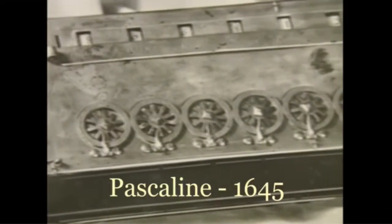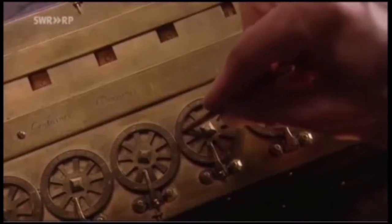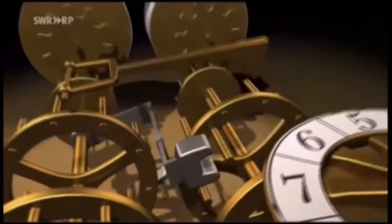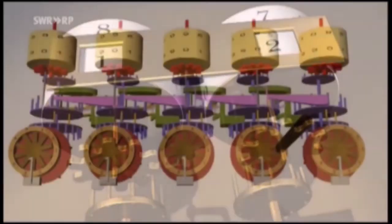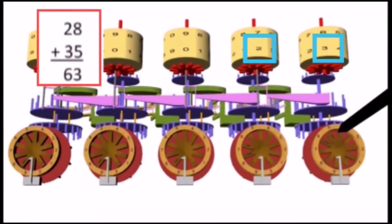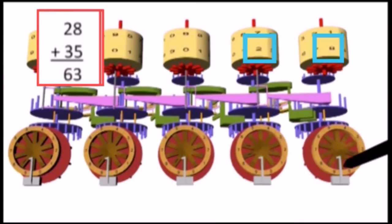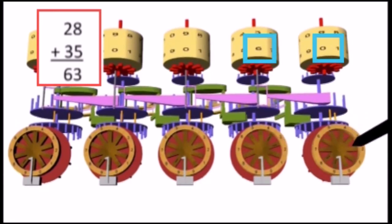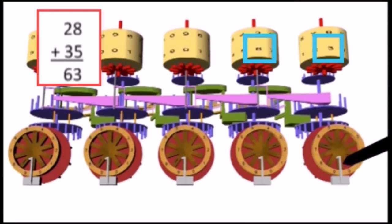The Pascaline used a series of dials across the front and a stylus for rotating those dials. Movements to the right would lead to increased numbers for addition. Movements to the left would decrease numbers for subtraction. Here, we're going to enter 28, 2 and then 8, 2 in the 10s, and then 8 in the 1s. We're going to add 35. So, we add 3 in the 10s, and 5 in the 1s, and the gears move the numbers up and down the scales.